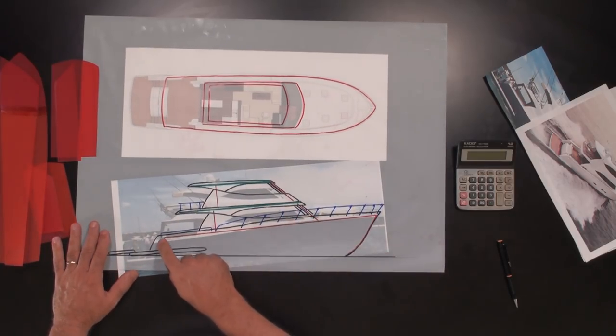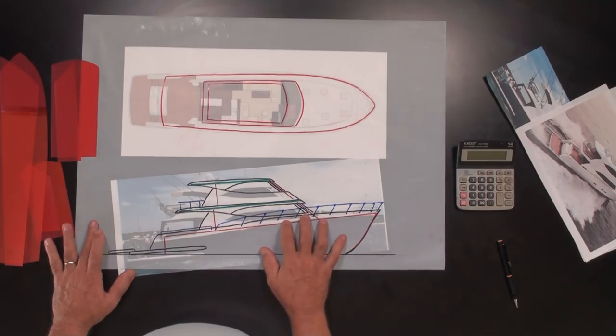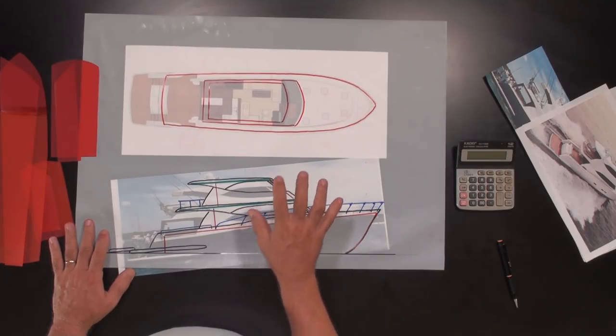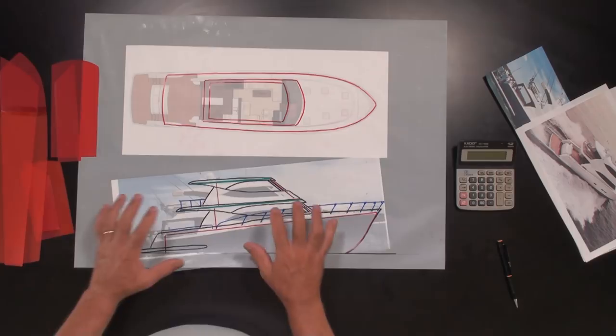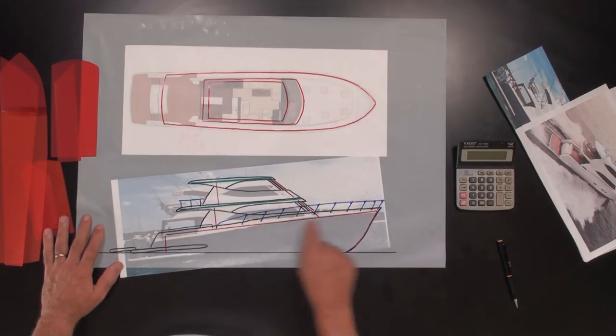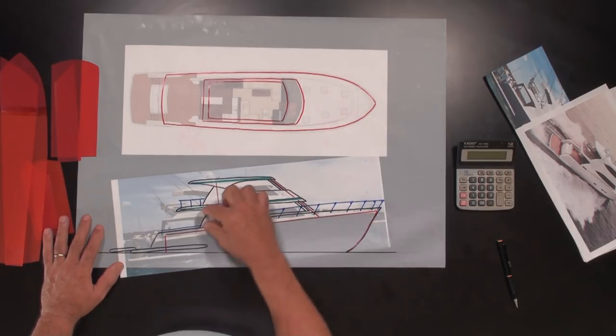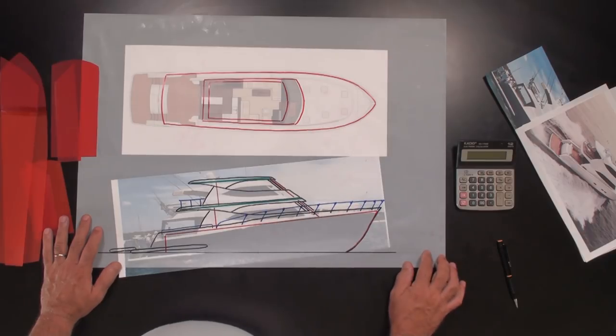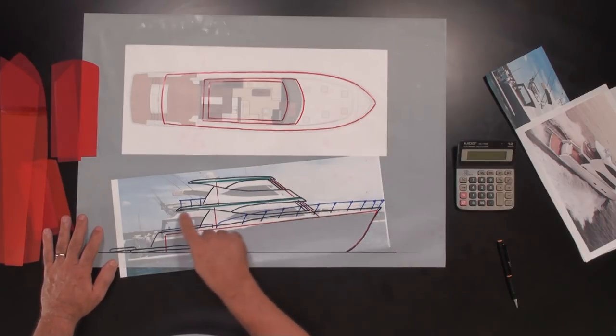So then, of course, what you see over here, there's three colors. The black lines show the actual final product, which is the boat would look like this, this size.